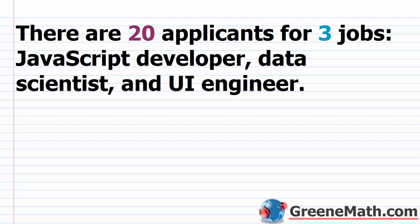We'll start with an example where there are 20 applicants for three jobs: a JavaScript developer, a data scientist, and a UI engineer. We're selecting three people out of the 20, and repetition is not allowed because the same person can't hold all three jobs. If the order is important, you use a permutation. If the order is not important, you use a combination.